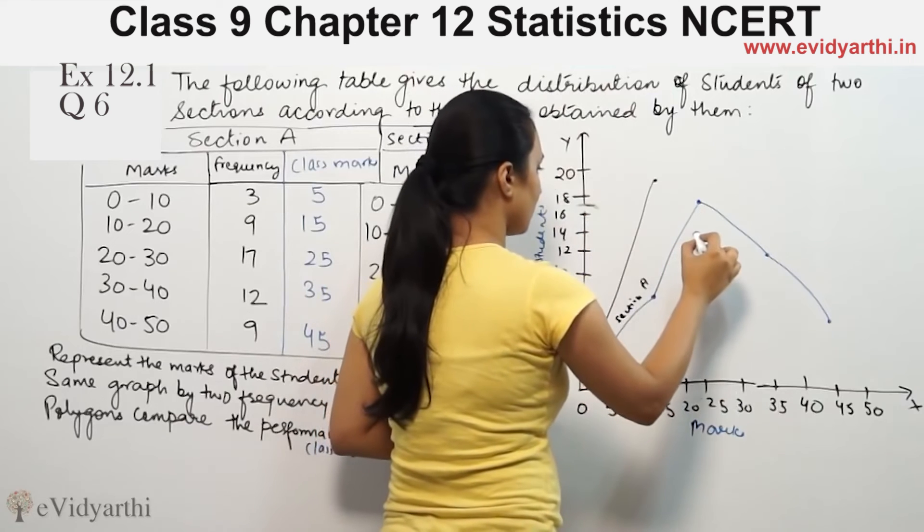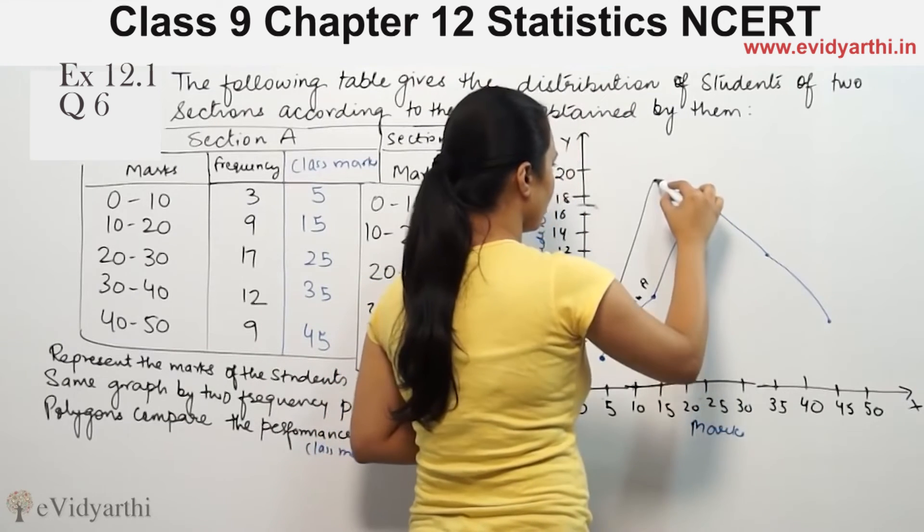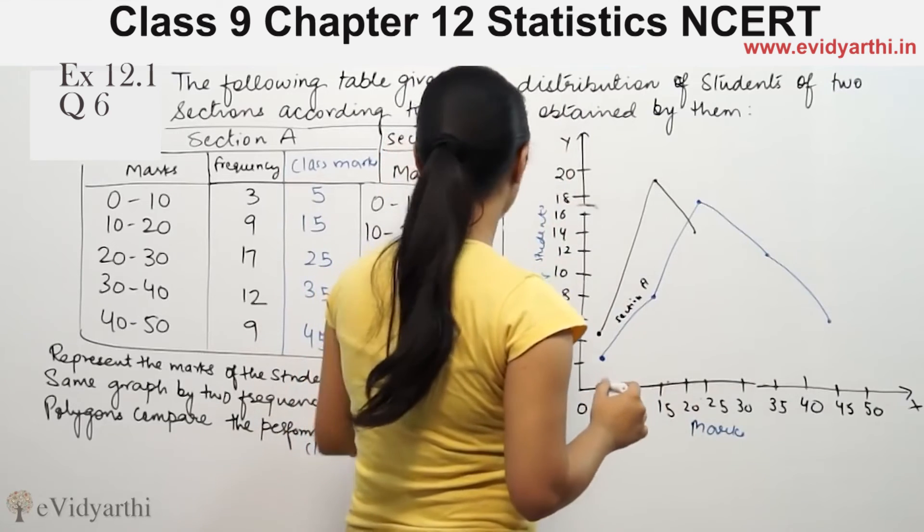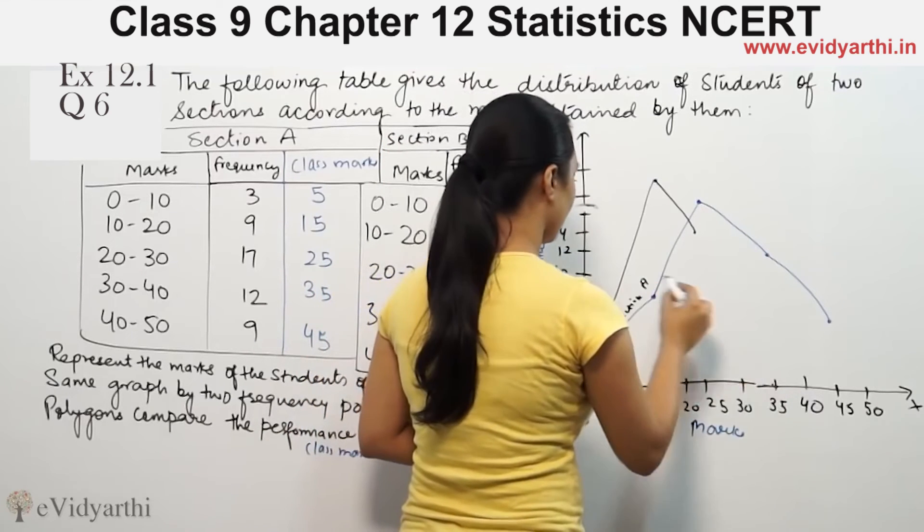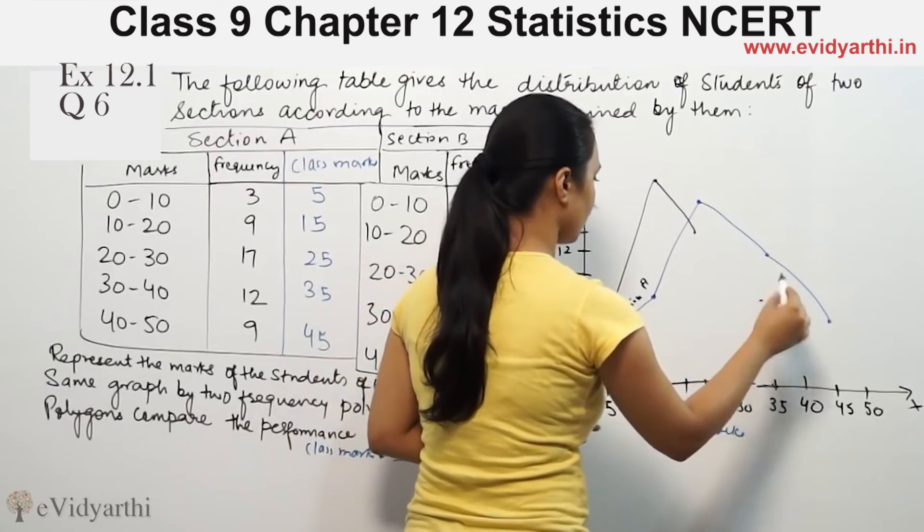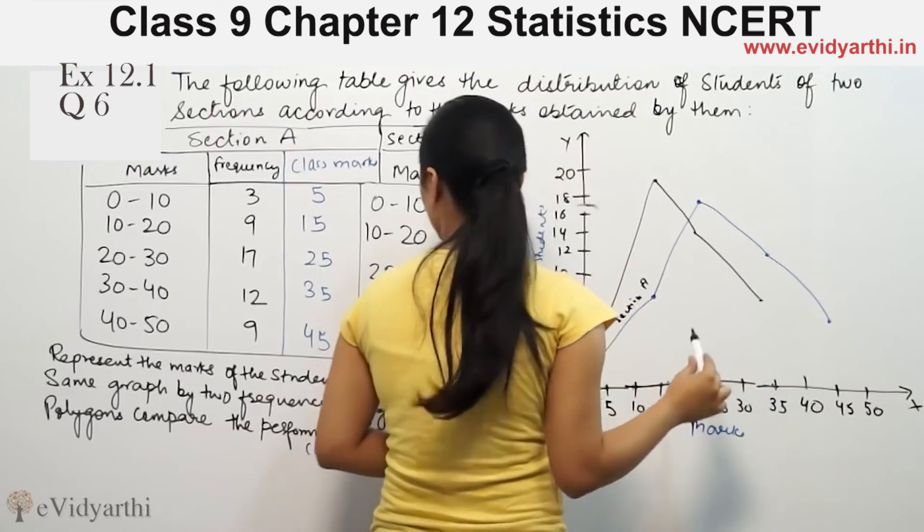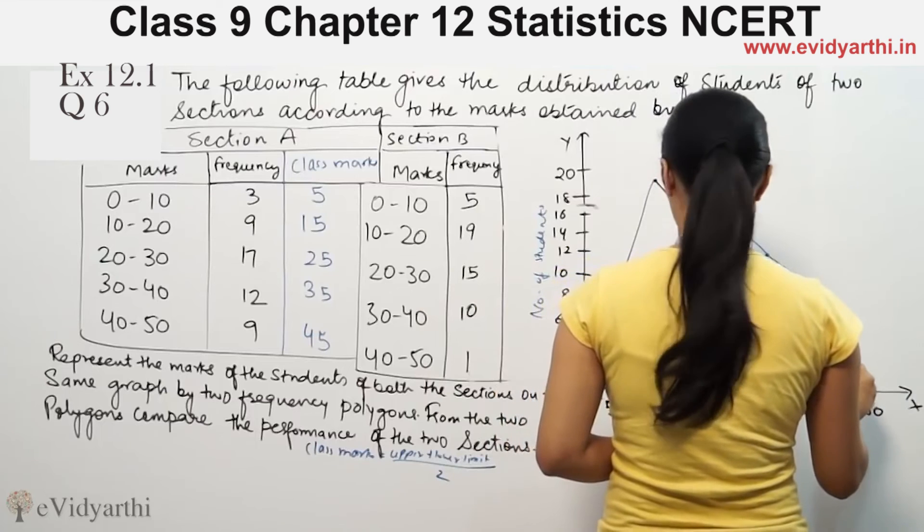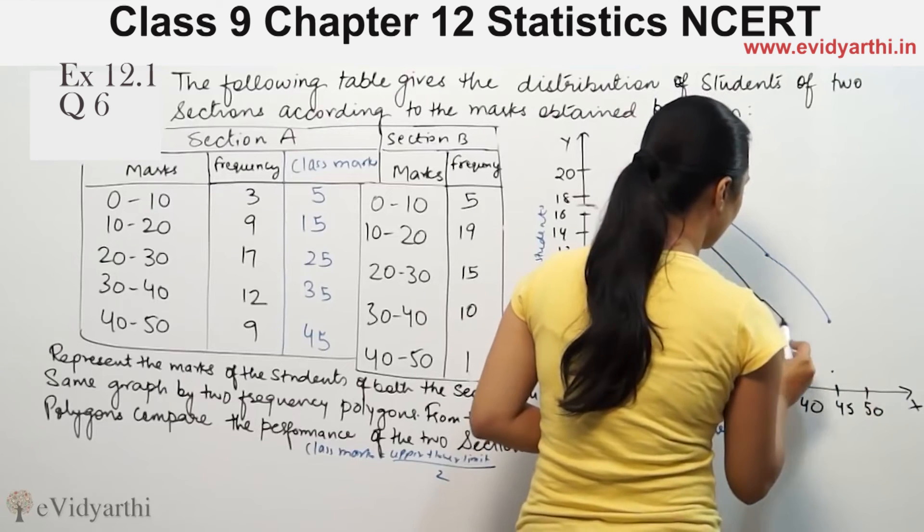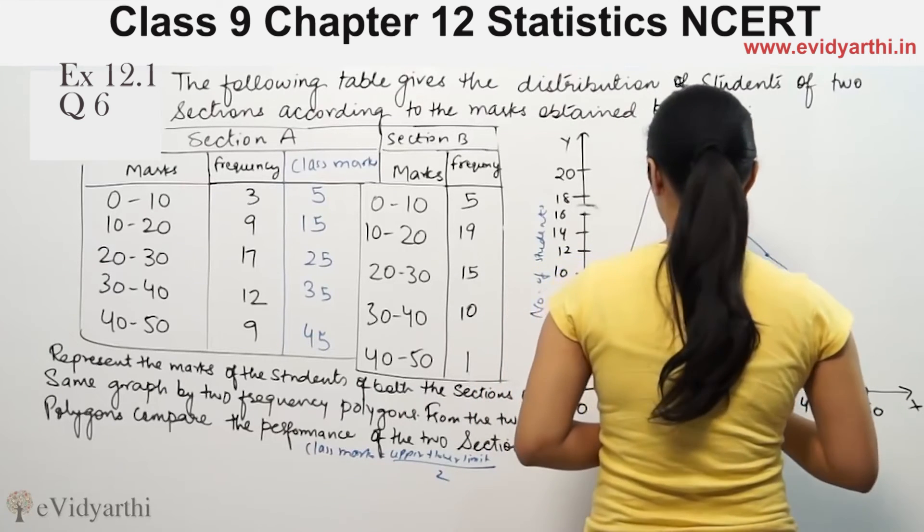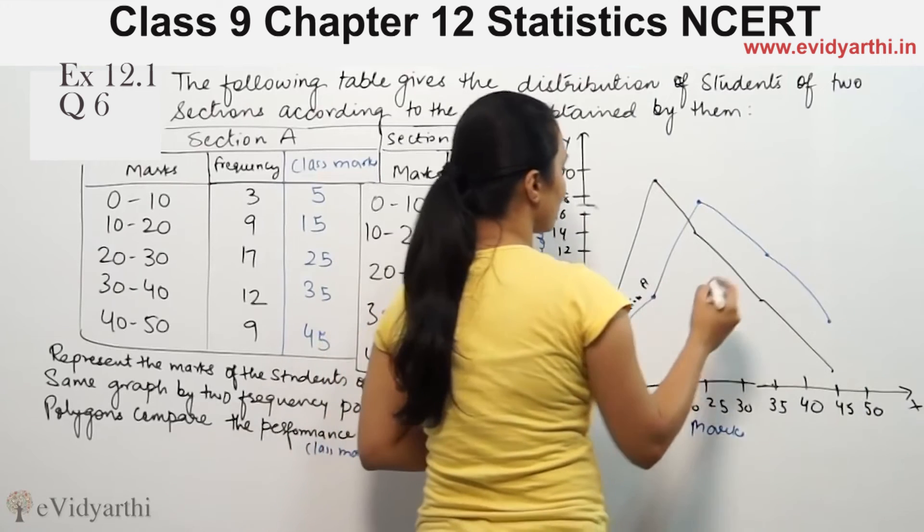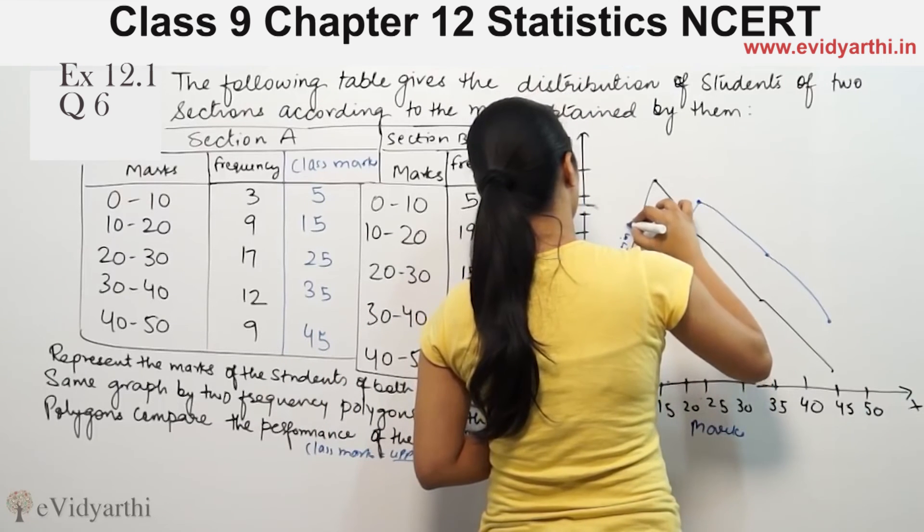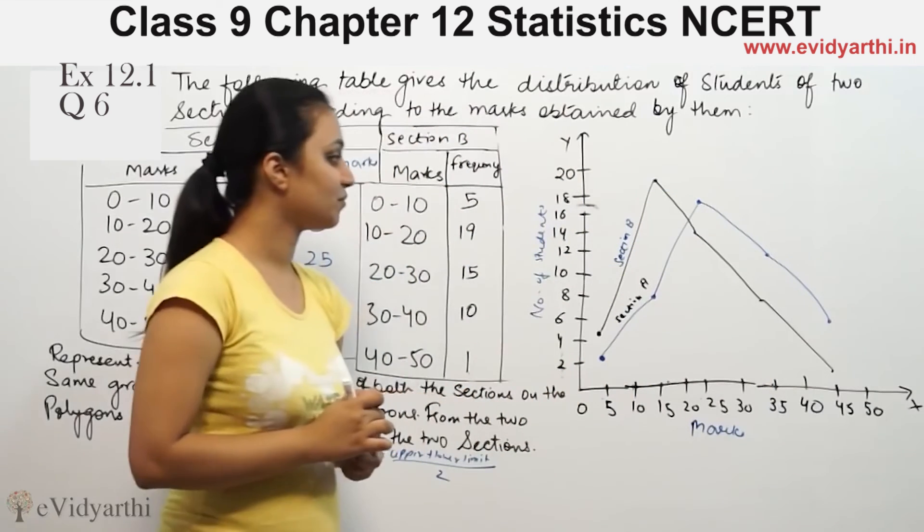Then I plot 35 and 10. Finally, 45 and 1. This completes the frequency polygon for Section B. These are the frequency polygons for both sections.